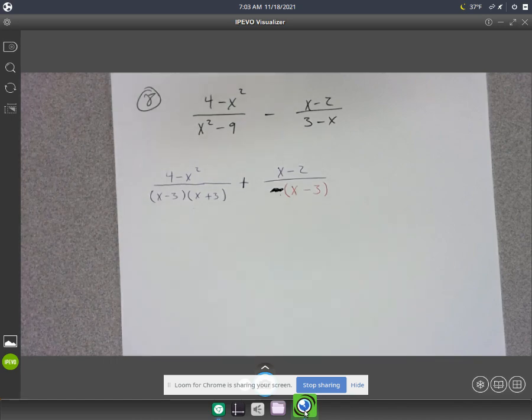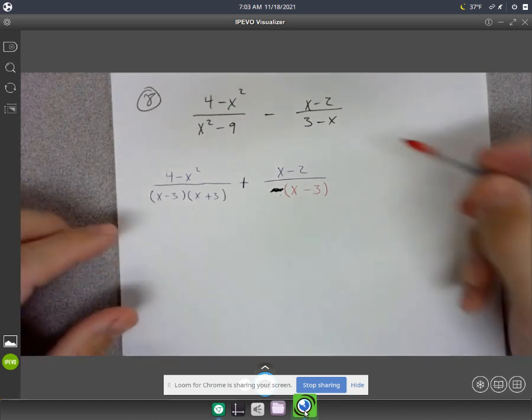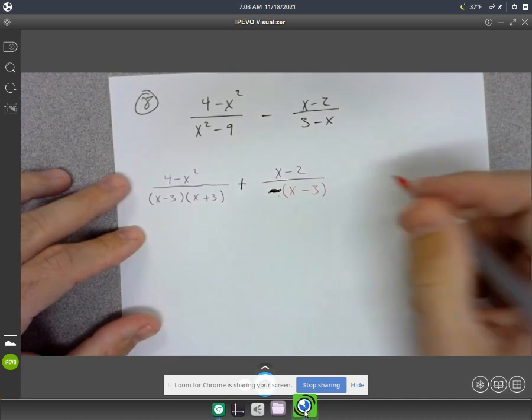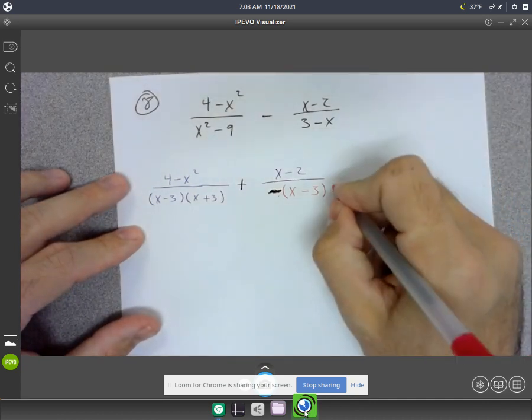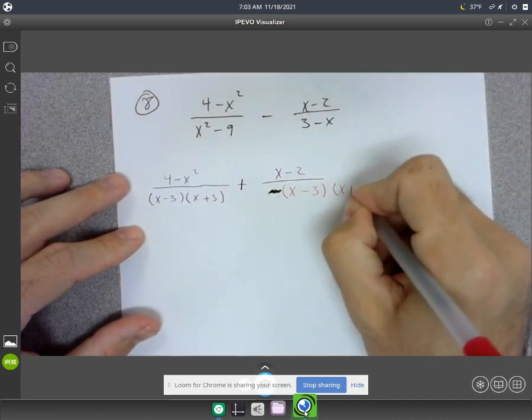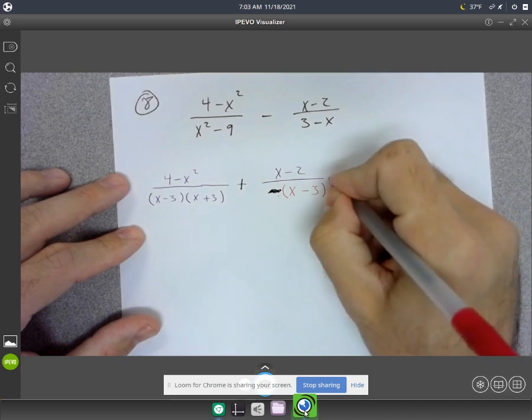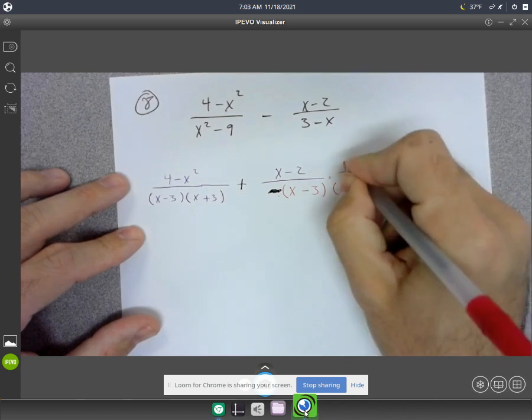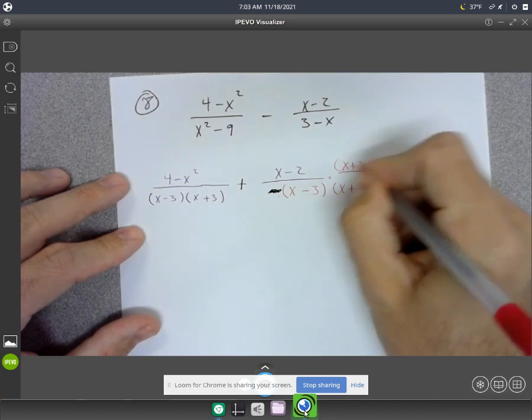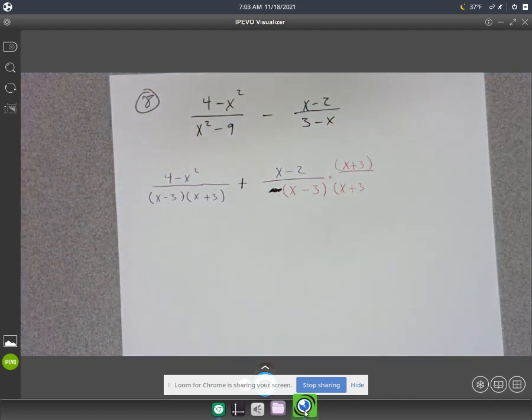All right, now what I need to do is I need to multiply this one on the right by x plus 3, x plus 3 over x plus 3. All right, so I'd recommend, you know, try the problem from here, see if you can finish it out.